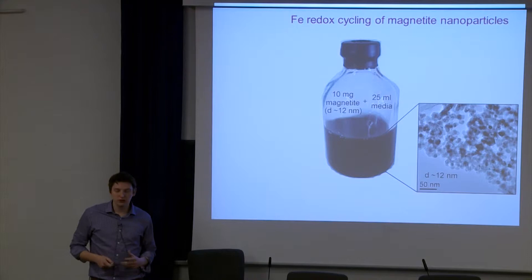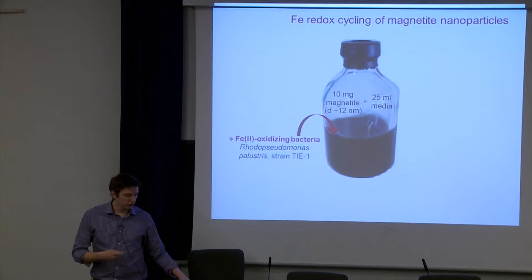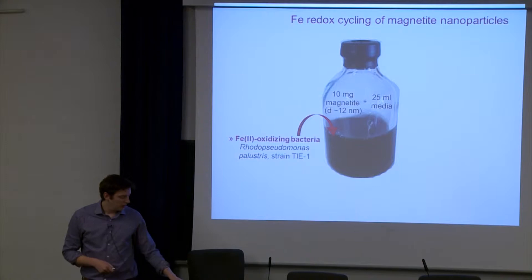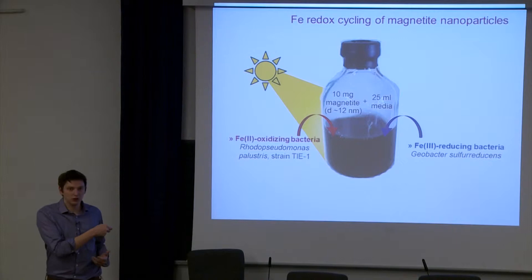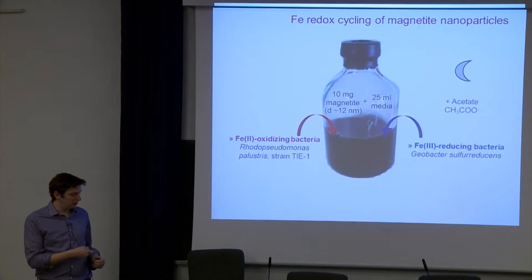Into this culture, I had the iron oxidizing bacteria Rhodopseudomonas palustris TIE-1 and the iron reducers Geobacter sulfurreducens. When I expose it to light, this stimulates the iron oxidizing bacteria. When I take it out of the light, put it in the dark and incubate it in the presence of acetate, this stimulates the iron reducing bacteria. I can cycle between these two different processes, as I'll show you later on.